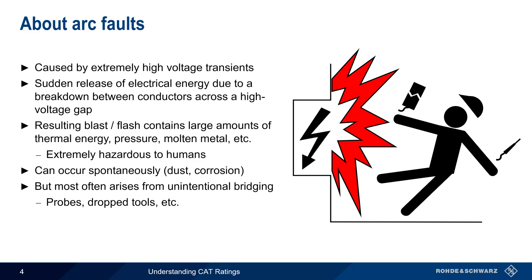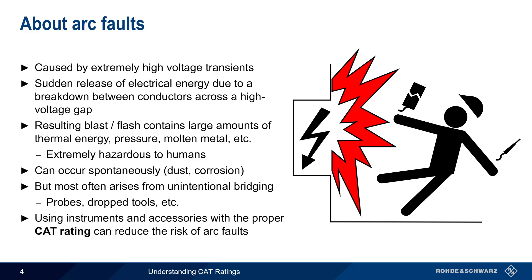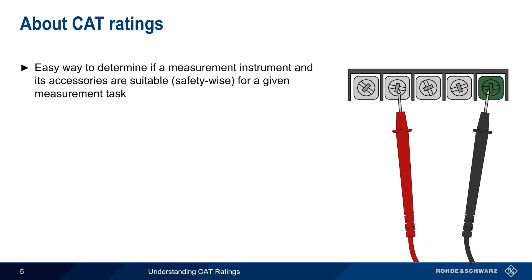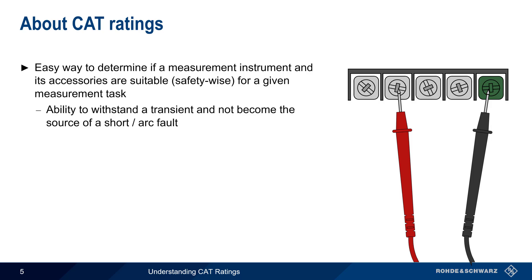The risk of arc faults can be reduced by using instruments and accessories with appropriate CAT ratings. CAT ratings are a clear and easy way to determine if a measurement instrument and its accessories are suitable, in terms of safety, for a given measurement task. Safe in this context refers to the measuring instrument's ability to withstand a given transient and not become the source of a short and or an arc fault. Another way of saying this is that CAT ratings help answer the question: is it safe to use this instrument in this measurement environment?